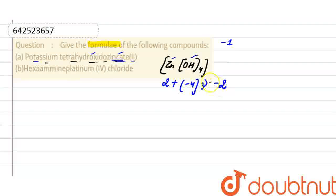That means this negative indicates that it is a negative complex. And to balance out this charge, there are 2 potassium ions. So the formula of this complex is K2[Zn(OH)4]. And there are 2 potassium ions.